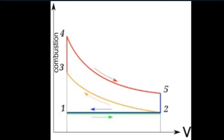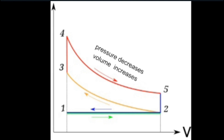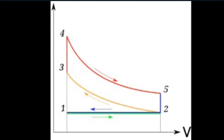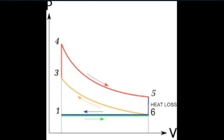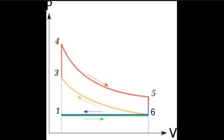From three to four on the graph, the pressure increases with constant volume — this is where combustion takes place. From four to five, the pressure decreases and volume increases. This process is called the power stroke. The spark plug ignites the compressed air-fuel mixture; the rapid combustion creates high pressure, forcing the piston down and increasing volume in the cylinder — this is the stroke where the engine produces power. From five to six, heat loss occurs where pressure decreases with constant volume. After this, from two to one, the exhaust stroke takes place — the exhaust valve opens and the piston moves up, pushing the burnt gases out of the cylinder and decreasing the volume.